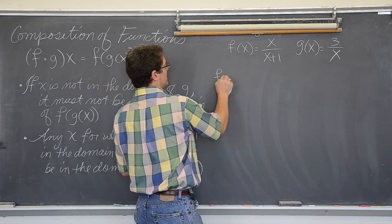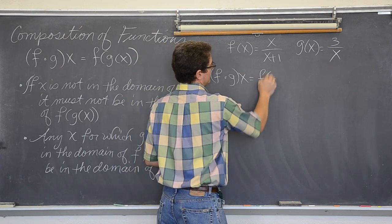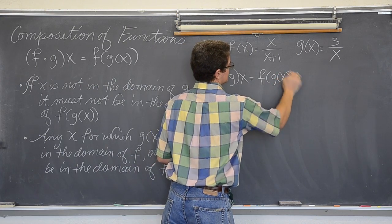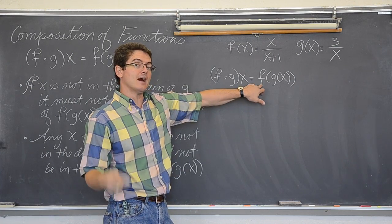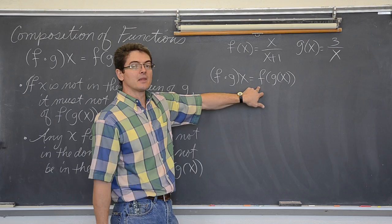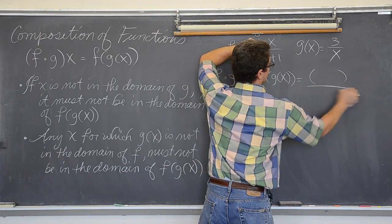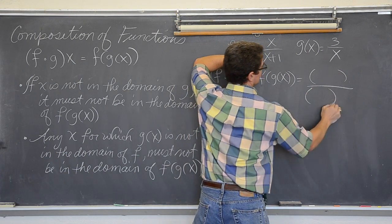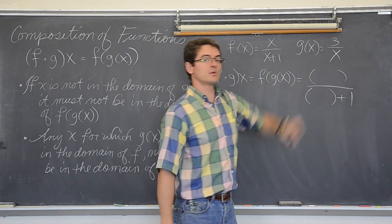So, we want to find f of g of x or f of g of x. Well, again, this is your framework, function f, the outside or the first notation. So, f is something over something plus 1. That something we are plugging in is 3 over x.